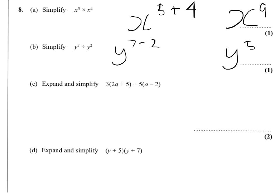So expand and simplify. We have to do 3 lots of 2a, which is 6a, 3 lots of 5, which is 15, 5a plus 5a, and 5 times minus 2 is minus 10. So that's the expand part.